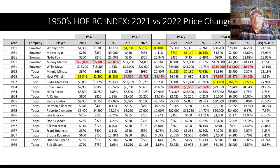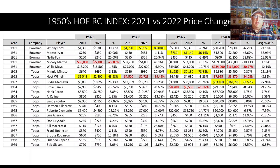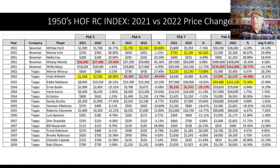Just in general, you'll see the PSA 6 Whitey Ford, the PSA 7 Monty Irvin, the Minnie Minoso 52 Topps. Minnie Minoso is a new Hall of Famer, so it makes sense for his cards to go up. Hoyt Wilhelm, the 52 Topps PSA 5, and the PSA 8 Eddie Matthews 52 Topps.